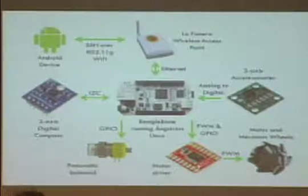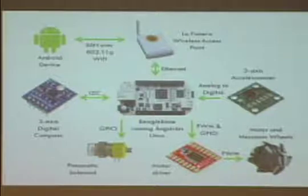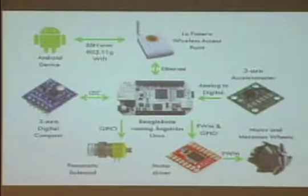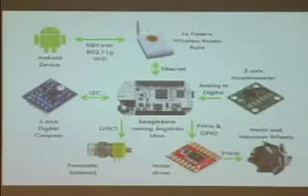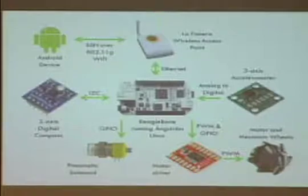The BeagleBone handles all communications between the Android software and the sensors — our digital compass and accelerometer. It also handles motor drive control using a motor driver with effectively quadruple H-bridges, as well as the pneumatic solenoid which controls the pneumatic pressure system.